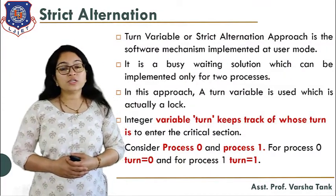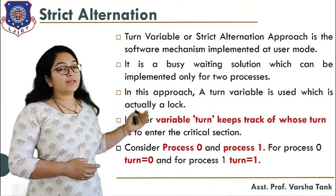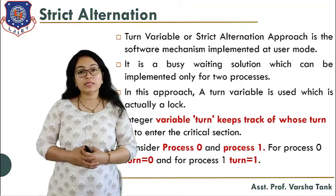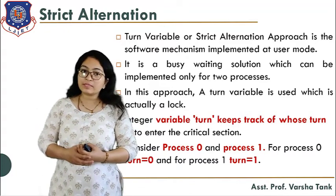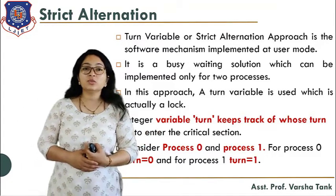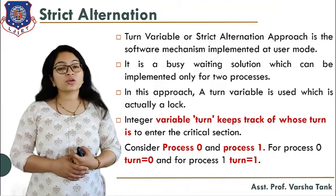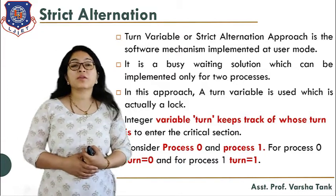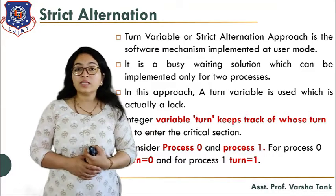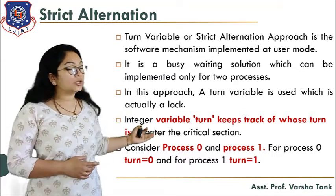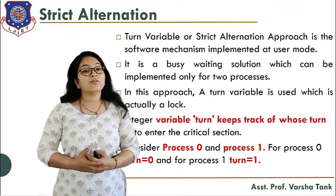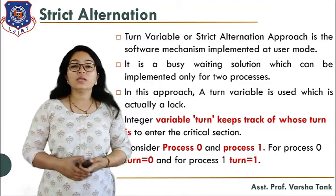The next solution is strict alteration. The turn variable or strict alteration approach is a software mechanism implemented in user mode. It is a busy waiting solution for two processes. A turn variable — an integer lock — keeps track of whose turn it is to enter the critical section. For process P0 the turn is 0, for process P1 the turn is 1. If turn is 0, P0 executes; if turn is 1, P1 executes.